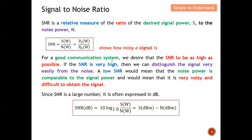For a good communication system, we desire the SNR to be as high as possible. We want the signal strength S to be as large as possible and the noise N to be as small as possible. When a very large number is divided by a very small number, we get a very high SNR.